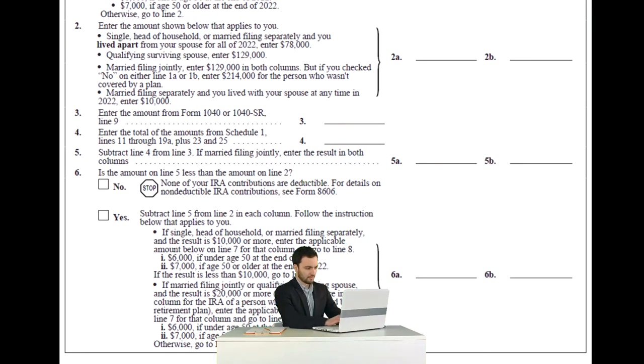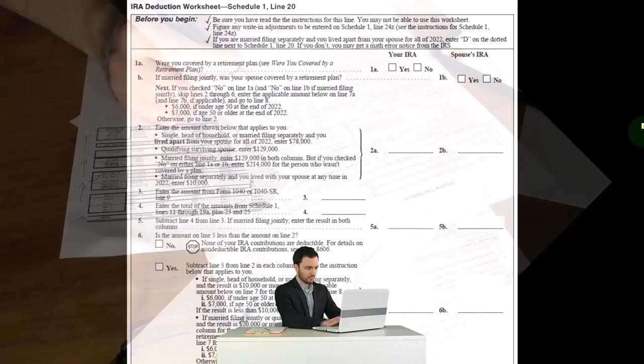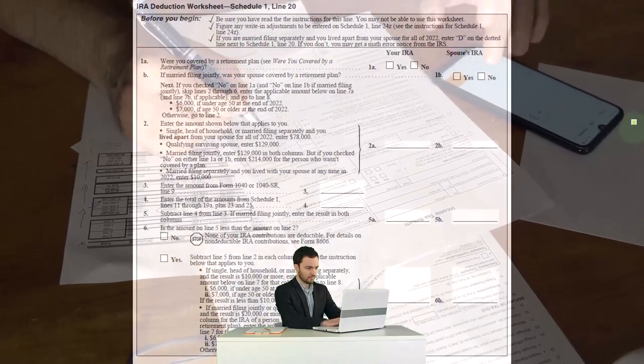Scenarios where we might also have access to, say, a 401k plan or a 403b plan, or we're married to someone who has access to a 401k or 403b plan or something like that.